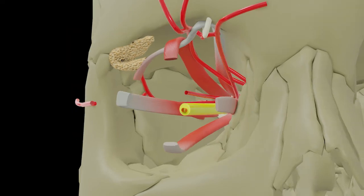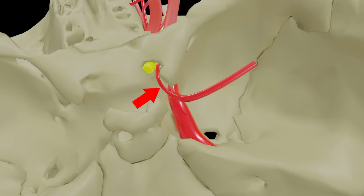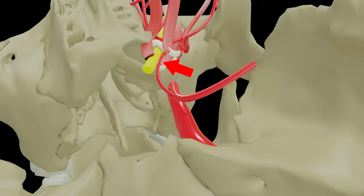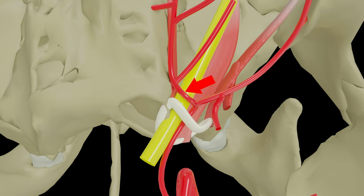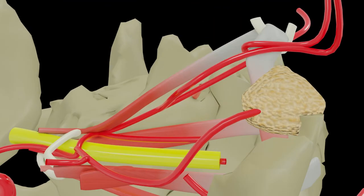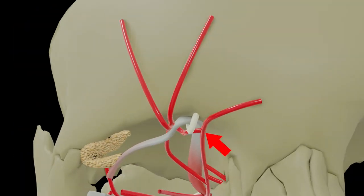The ophthalmic artery takes its origin as a branch of the cerebral part of the internal carotid artery, given off medial to the anterior clinoid process. It enters the orbit through the optic canal, lying inferolateral to the optic nerve. Within the orbit it crosses the optic nerve above from lateral to medial side, then runs forwards along the medial wall of the orbit, lying between the superior oblique muscle above and medial rectus below, running parallel to the nasociliary nerve.